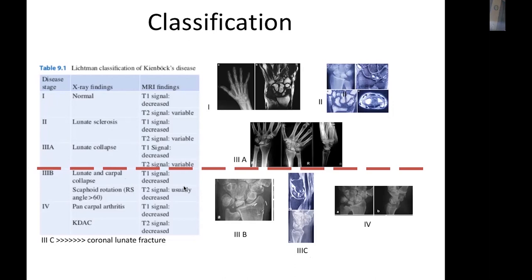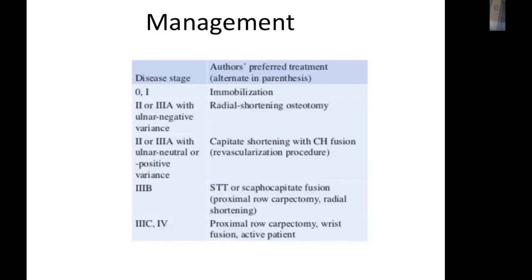It is critical to identify the cutoff between stages 1, 2, and 3A because these are salvageable and revascularization of the lunate can be attempted. In stages 3B, 3C, and 4, only salvage procedures are performed — metacarpal fusion or proximal row carpectomy. Suggested treatment: stages 1, 2, and 3A — immobilization, then joint leveling by radial shortening or capitate shortening, plus or minus revascularization; stages 3B, 3C, and 4 — salvage procedures including STT or scaphocapitate fusion, proximal row carpectomy, or wrist fusion.